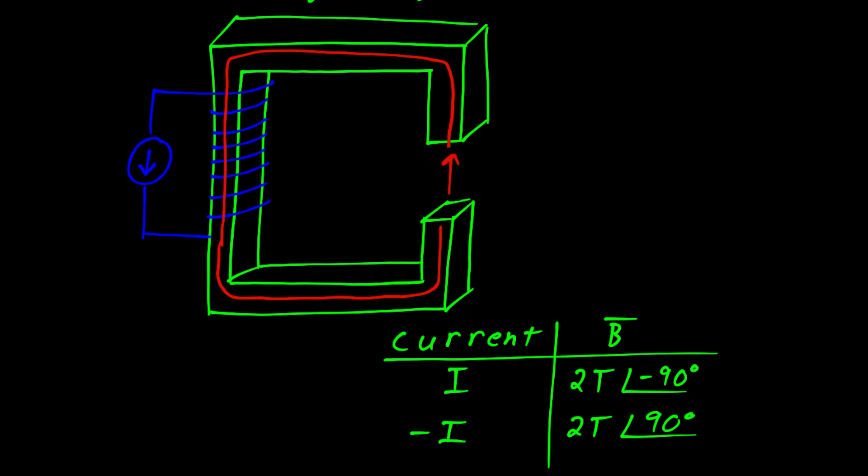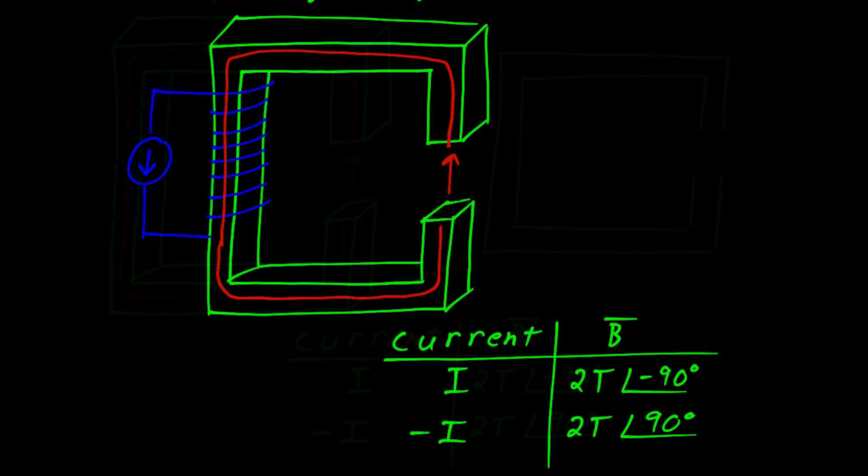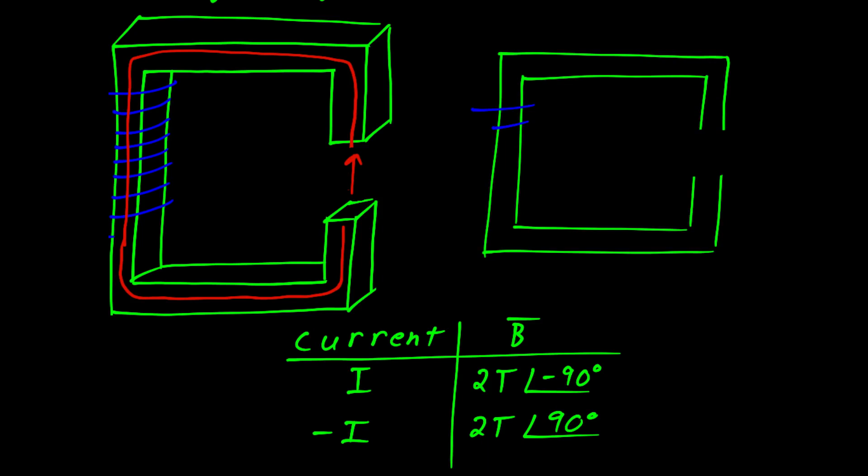Now, this is a lot of work sketching these three-dimensional drawings. In the future, it would be more convenient if we could represent this as a two-dimensional drawing. The 2D sketch looks something like this. Nothing's changed. We still have the same magnetic circuit with the same coil with the same air gap and the same vectors.